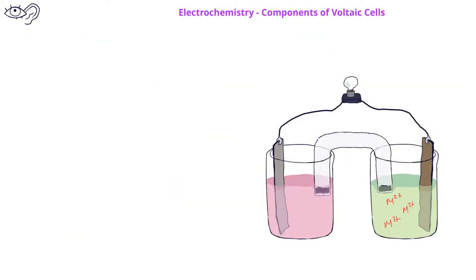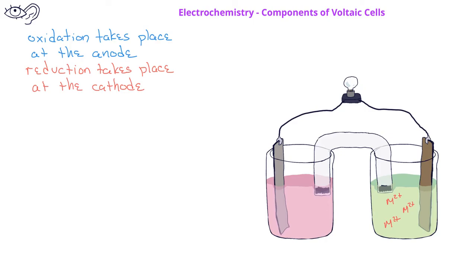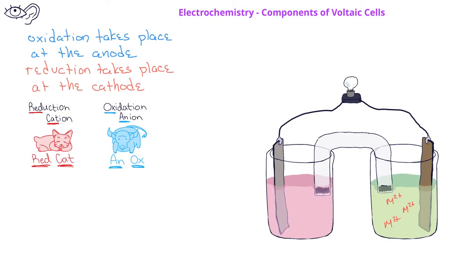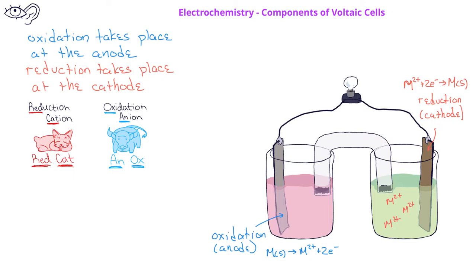In electrochemical cells, we call the electrode where oxidation occurs the anode, and the electrode where reduction occurs is called the cathode. You might remember these from the mnemonic device ANOX and REDCAT, so we have reduction occurring at the cathode and oxidation occurring at the anode. In a voltaic cell, the anode is the more negatively charged electrode, and so we label it with a negative sign. The cathode of a voltaic cell is more positively charged, and we label it with a positive sign. Electrons flow from the anode to the cathode, or from negative to positive, through the wires connecting the electrodes.